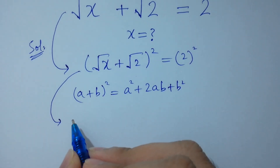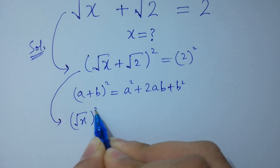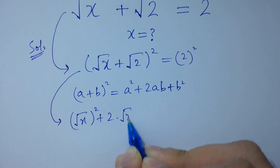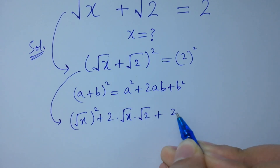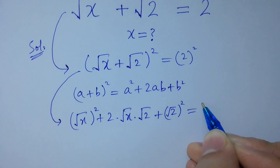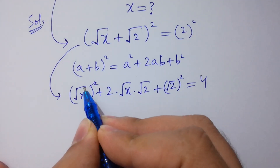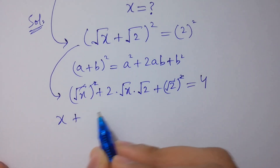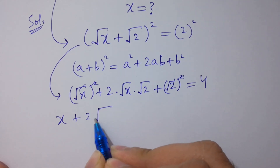It will be: square root of x, squared, plus 2 times square root of x times square root of 2, plus square root of 2 squared, equals 2 times 2, which is 4. The square cancels from square root of x.